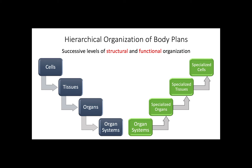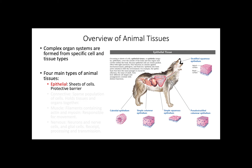Let's look at the specific tissues found in animals. Organ systems are formed from specific cells and tissue types. In animals, we can describe four main types of tissue: epithelial, connective, muscle, and nervous tissue. The epithelial tissue covers the outside of the body and the lining of organs in the body. Its main function is to serve as a protective barrier from mechanical injury, pathogens, and fluid loss. The epithelial tissue is made up of different cells arranged in specific patterns, depending on the location and function they serve in the body. We can then describe five major epithelia.